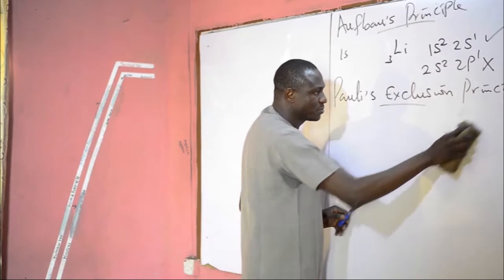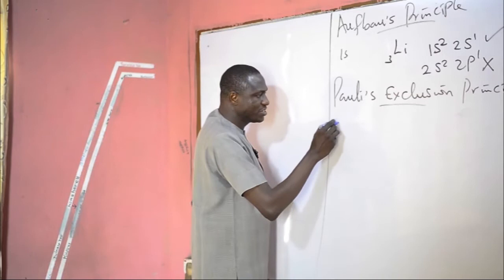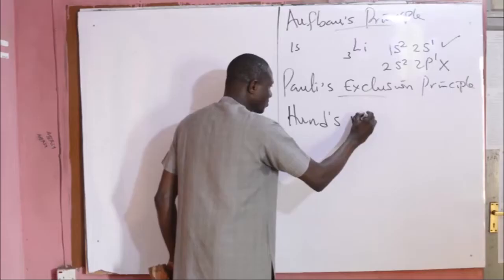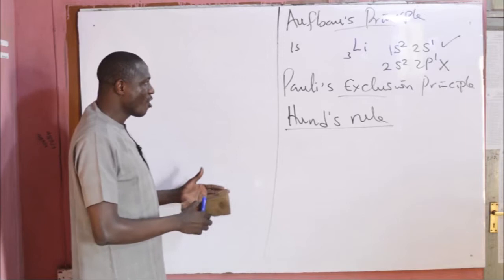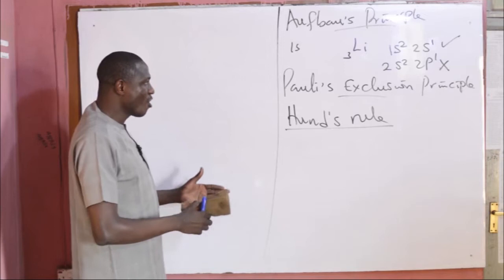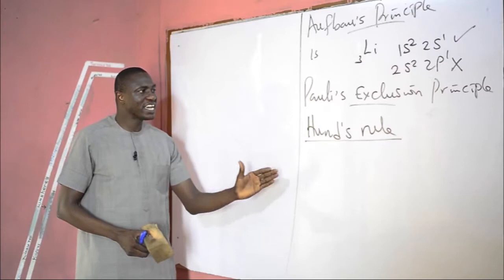We are going to look at the explanation of that by taking some exercises later. Then we have Hund's rule. This rule states that when writing the electronic configuration of an atom whereby you have orbitals with two or more degeneracy, electrons enter each of those orbitals singly before pairing occurs.